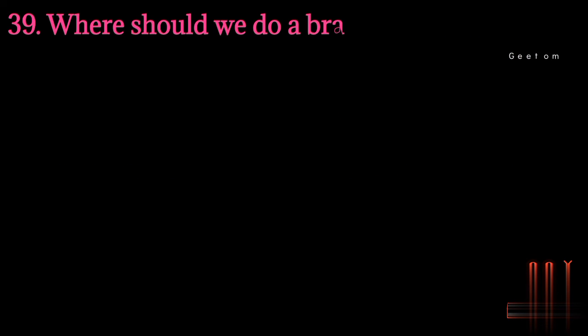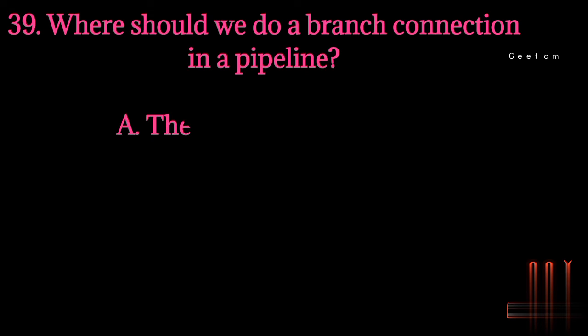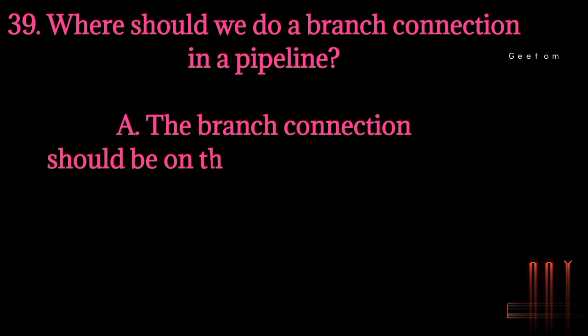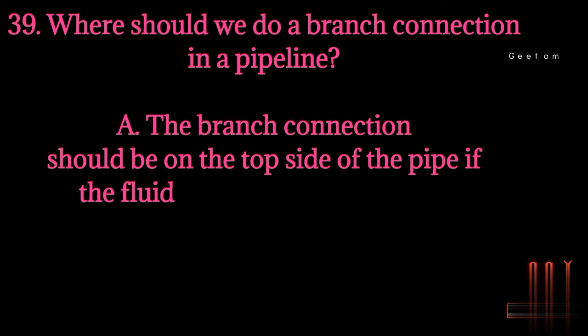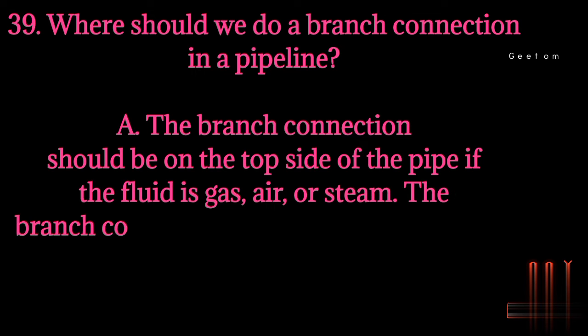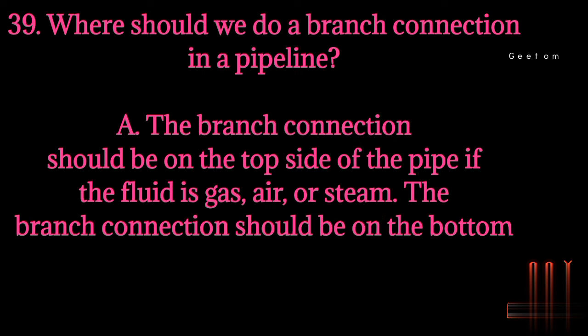Question 39: Where should we do a branch connection in a pipeline? Answer: The branch connection should be on the top side of the pipe if the fluid is gas, air, or steam. The branch connection should be on the bottom side of the pipe if the fluid is liquid.